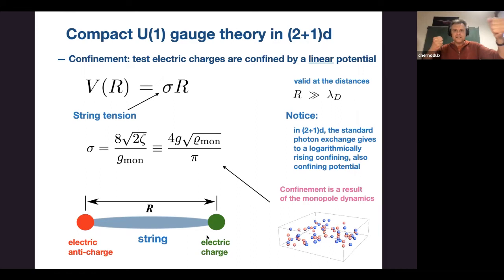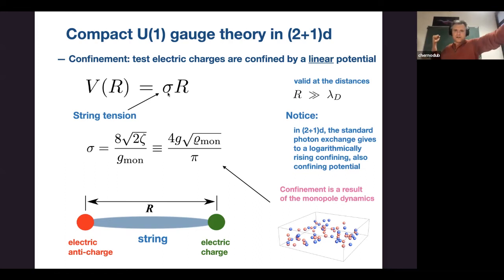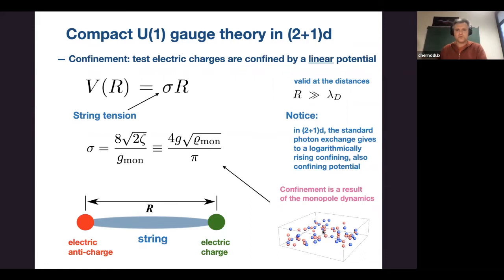This is an analytical result in the dilute gas approximation: the string tension σ is just proportional to the density of monopoles — you count the number of monopoles and anti-monopoles, take the modulus, sum them, and get σ. If monopole density is zero, there is no confinement because σ = 0. We know how to solve this theory analytically. Moreover, the theory has two phases: a confining phase at low temperature and a deconfining phase at high temperature.